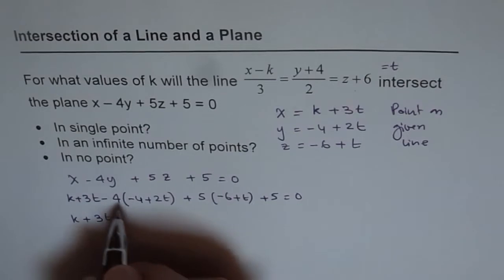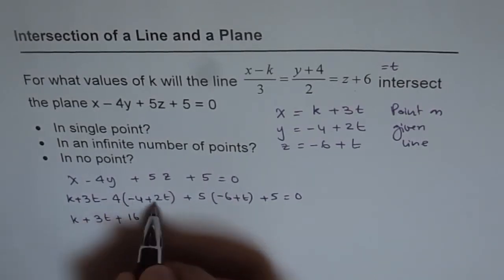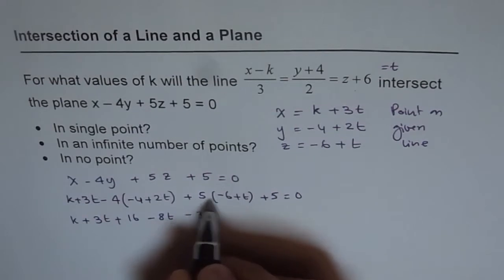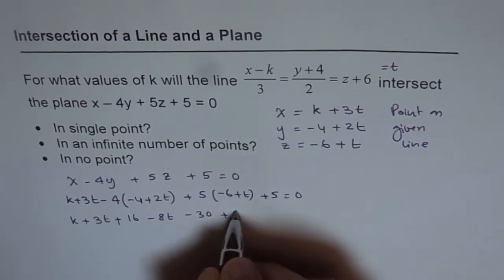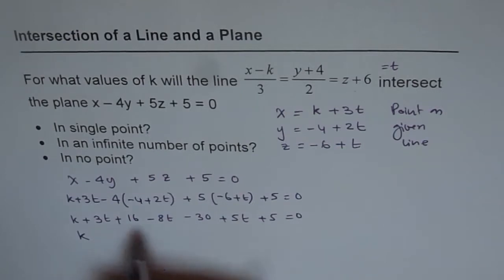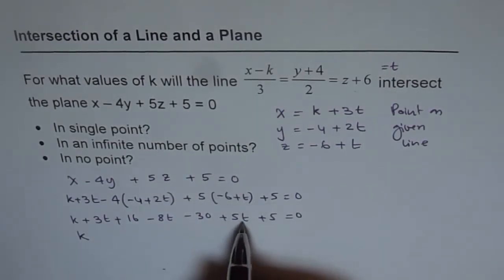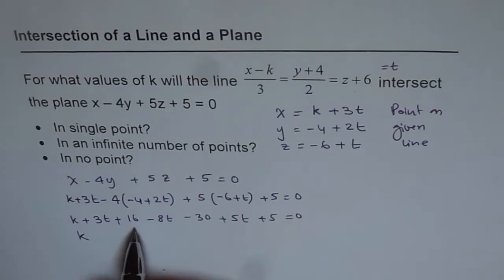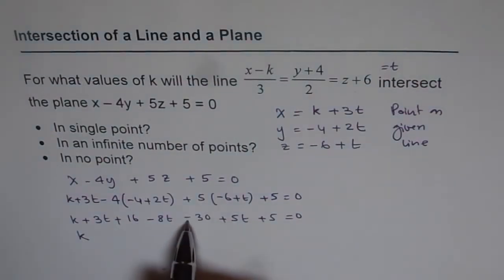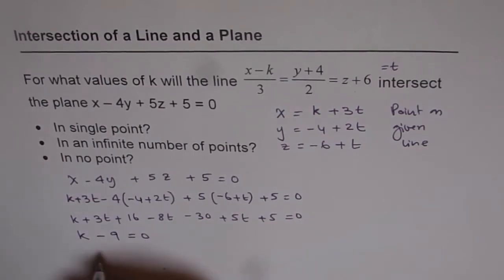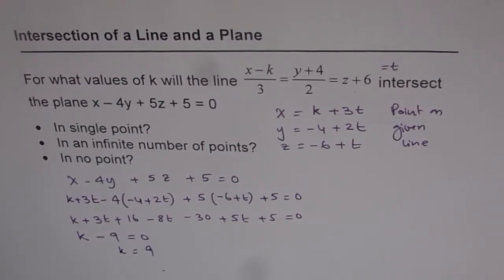Expanding: k plus 3t plus 16 minus 8t minus 30 plus 5t plus 5 equals 0. Combining the t terms: 3t minus 8t plus 5t gives 0t. The constants give 16 minus 30 plus 5, which is minus 9. So we get k minus 9 equals 0, giving us k equals 9.